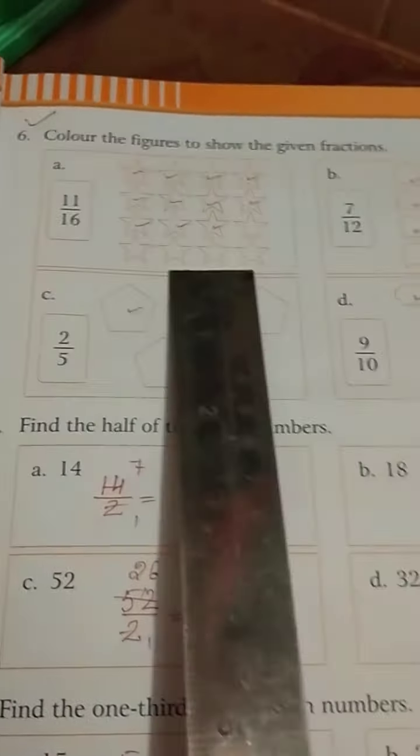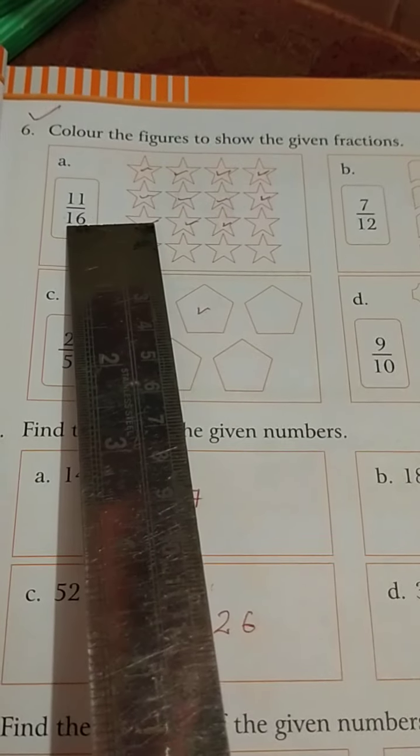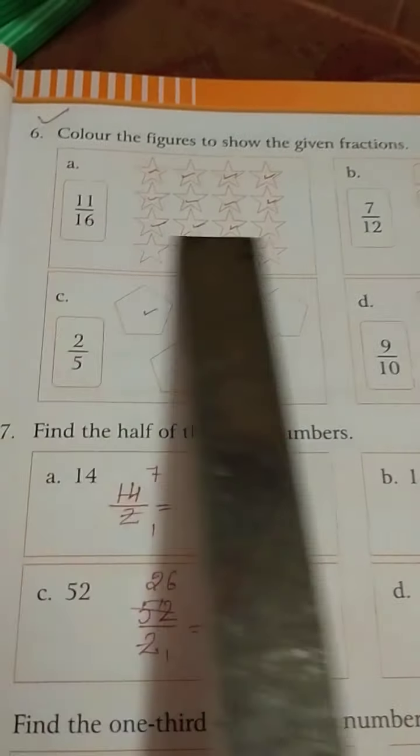11 by 16 means we have to color in 16 figures. 16 stars are there, total stars are 16 and fraction is 11 by 16. We have to color only 11 stars and total are 16.